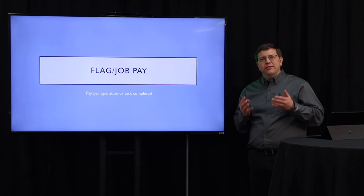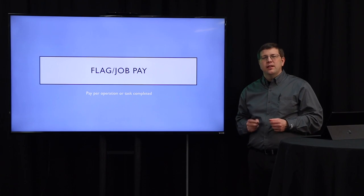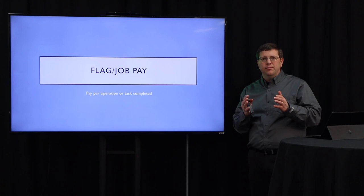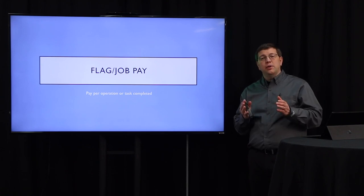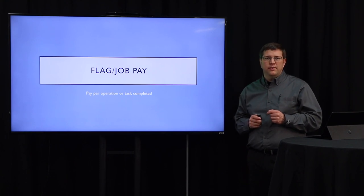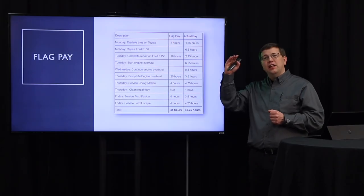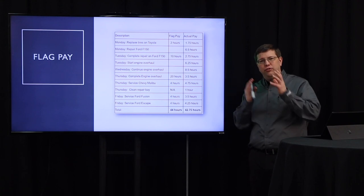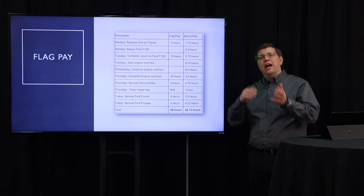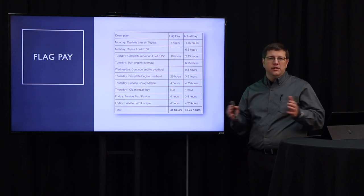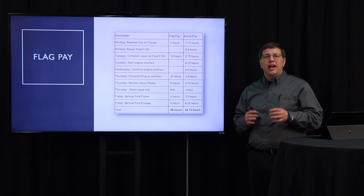We're happy to introduce the Flag Pay feature in EBMS 8.4. This allows you to specify an expected time frame in which an operation should be completed, by which a worker will be paid regardless of actual time. For example, if the first operation is expected to take two hours, the worker is paid for two hours whether it takes him more or less. A worker can have a mixture of flag pay operations and hourly work in a given week, and EBMS handles both and calculates payroll accordingly.